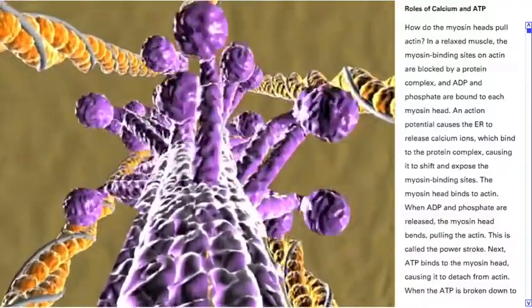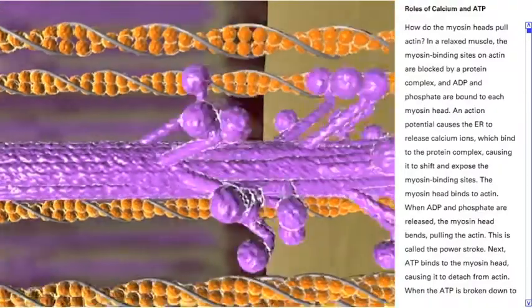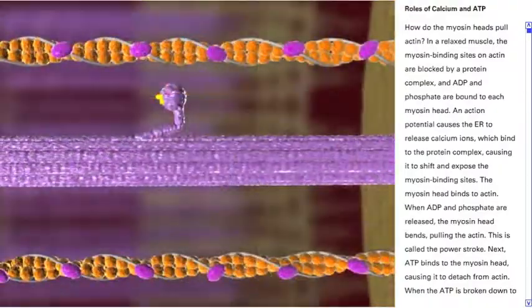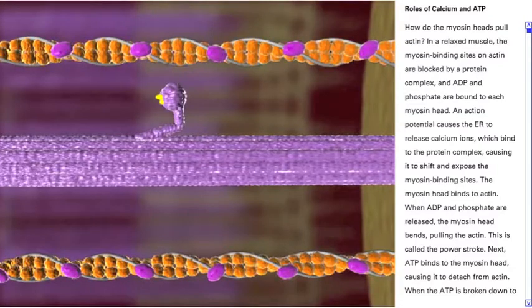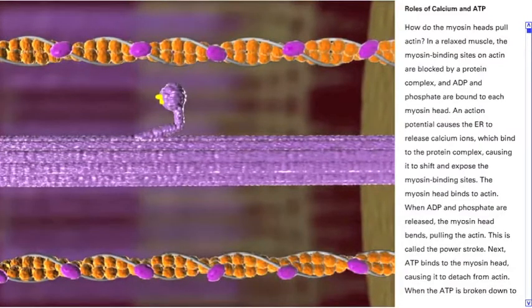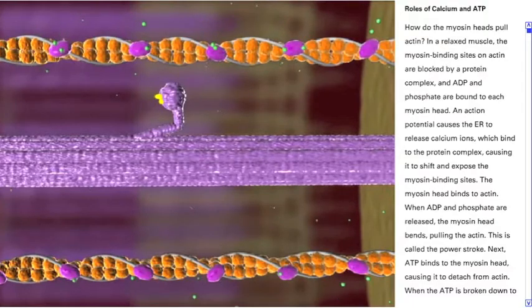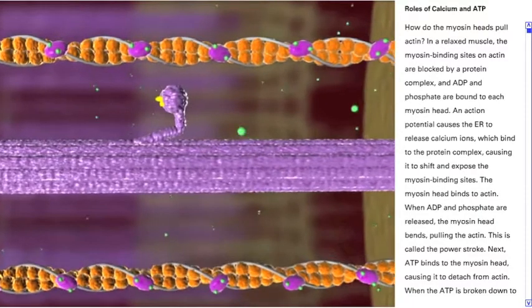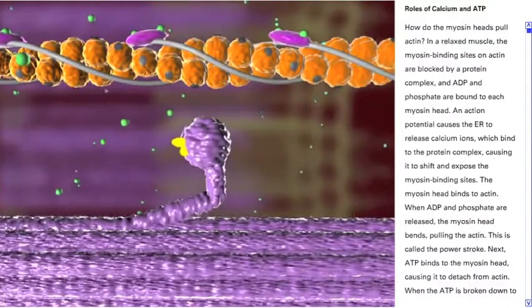How do the myosin heads pull actin? In a relaxed muscle, the myosin binding sites on actin are blocked by a protein complex, and ADP and phosphate are bound to each myosin head. An action potential causes the ER to release calcium ions, which bind to the protein complex, causing it to shift and expose the myosin binding sites. The myosin head binds to actin.